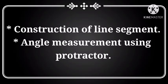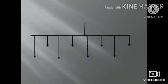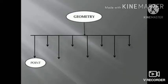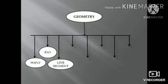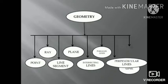For practical geometry — that is, construction of line segments and angle measurement using a protractor — these will come under 3 mark questions in unit test 3. So draw neatly and write the construction. In the geometry part, we are going to revise: parallel lines, intersecting lines, complementary angles and supplementary angles. All geometric figures are built by basic figures like point, ray, line segment, plane, intersecting lines, parallel lines, perpendicular lines and line.